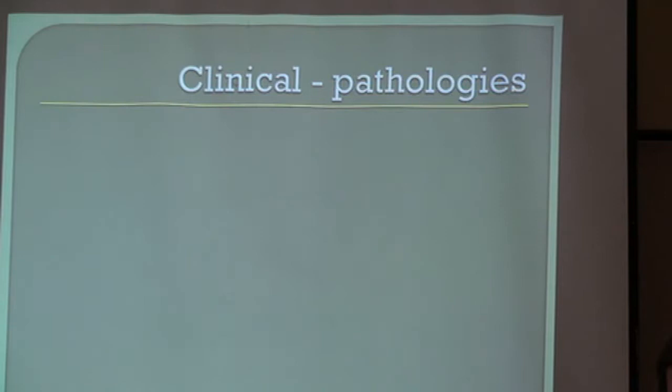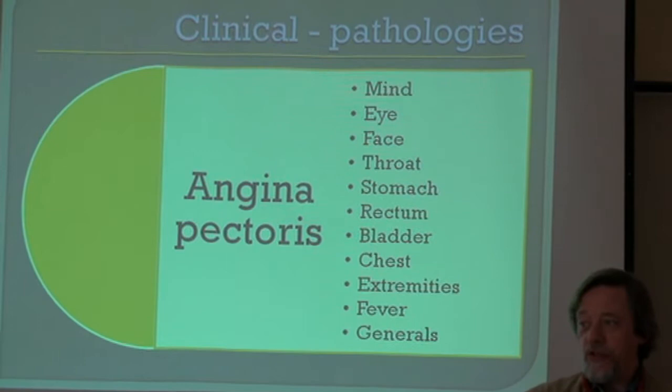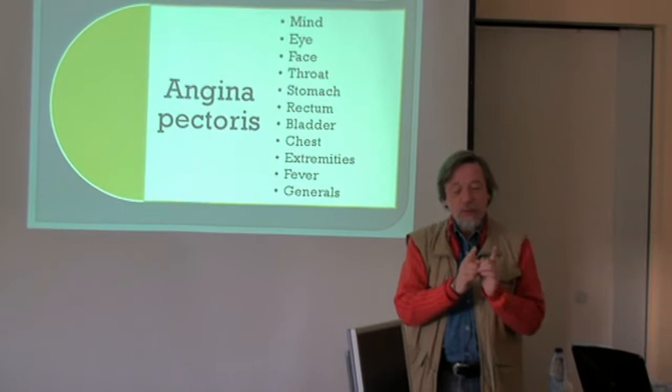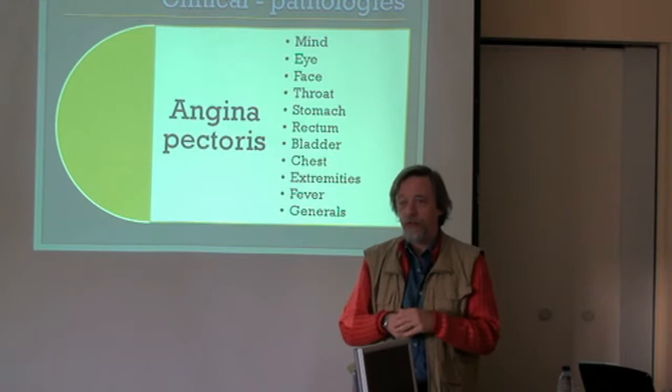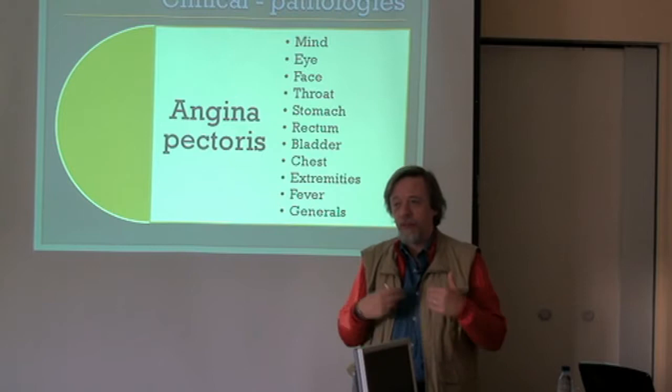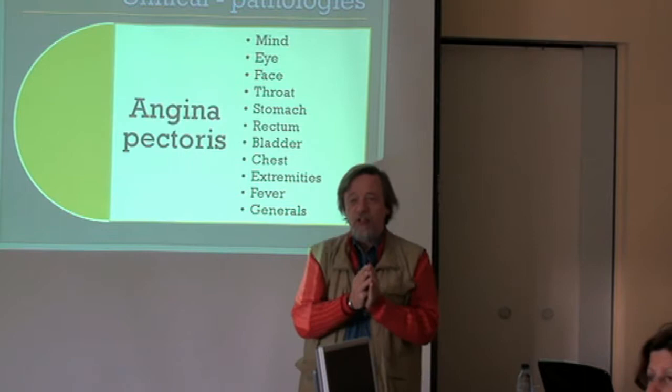The next example is for pathologies, and I have chosen angina pectoris. There is already a rubric with angina pectoris in the repertory, so what is the difference? The difference is that the remedies in this new rubric are based on the homeopathic symptoms which occur when someone has angina pectoris — the extension to the left arm, the pain, the problem with breathing, even the fear during the pain. We have taken those symptoms and created a rubric, 'angina pectoris.'